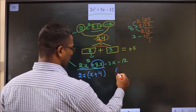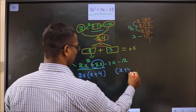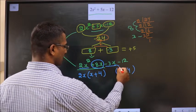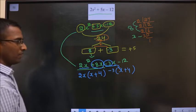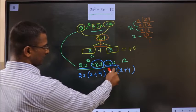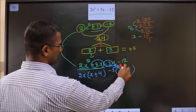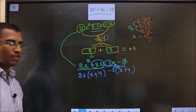Whatever you got here, here also you should get the same thing. So, from minus 3x, x has gone inside. So, outside should be minus 3. Clear? Even if you multiply, you will get the same thing. Next.